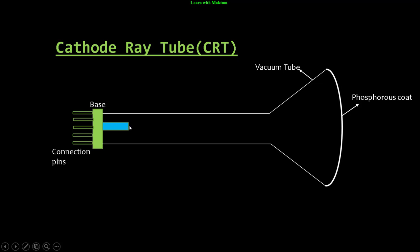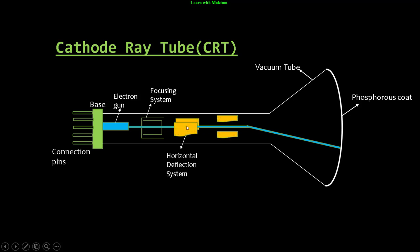After the base, we have something called an electron gun, which emits the electrons. That is, the electron beam will be emitted. These electrons are going towards the screen with the help of a focusing system and deflection system. There are two deflection systems: one is horizontal deflection system and another is vertical deflection system.